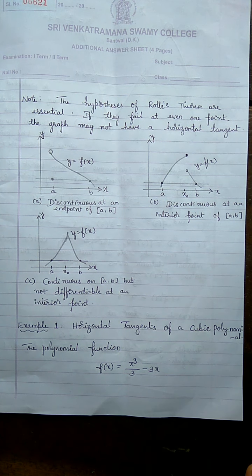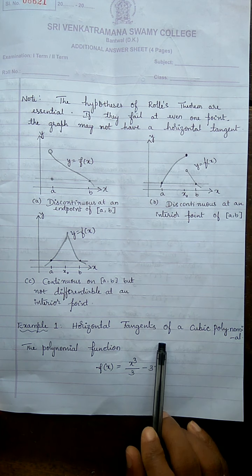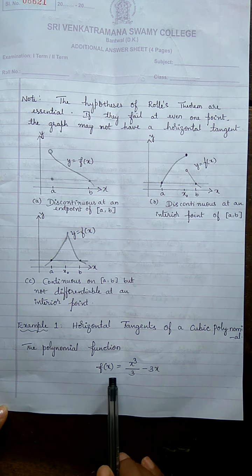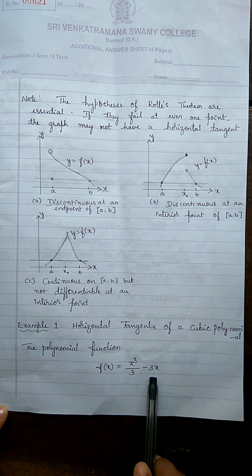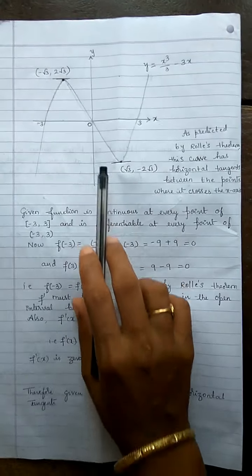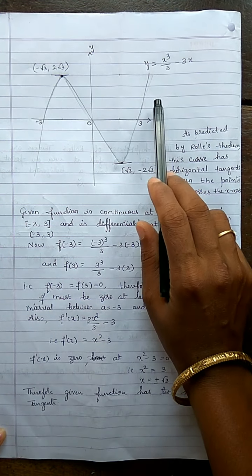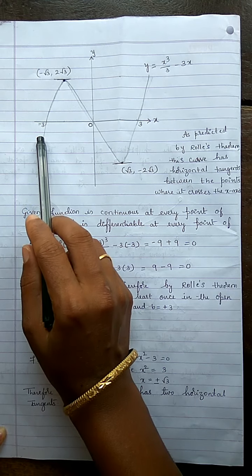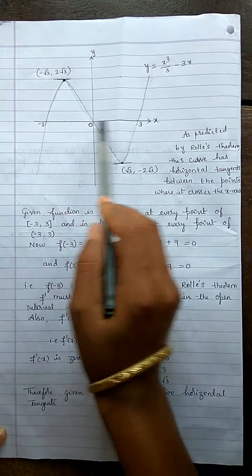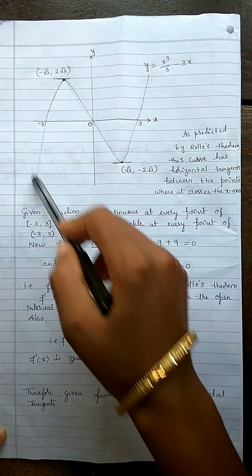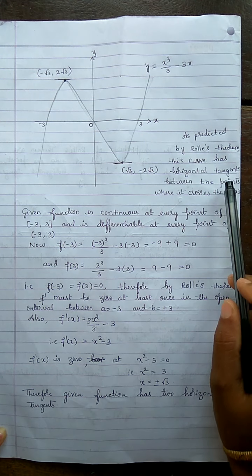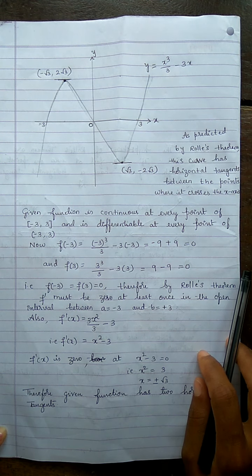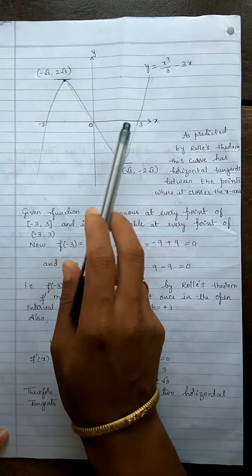Now let us see Example 1: horizontal tangents of a cubic polynomial. Consider the polynomial function f(x) = x³/3 − 3x. Draw the graph of this function. Observe that at the points x = −3 and x = 3, the function touches the x-axis (y = 0). As predicted by Rolle's theorem, this curve has a horizontal tangent at two points between where it crosses the x-axis.